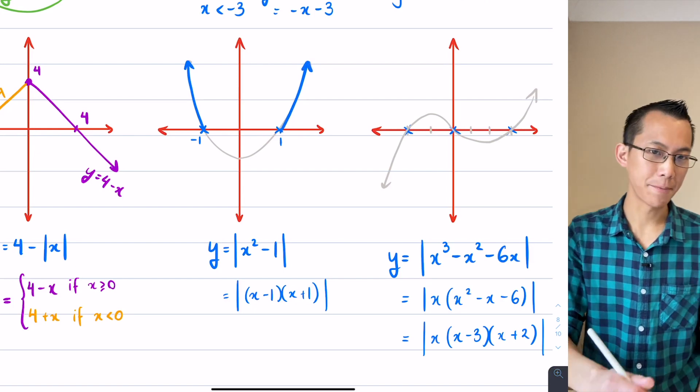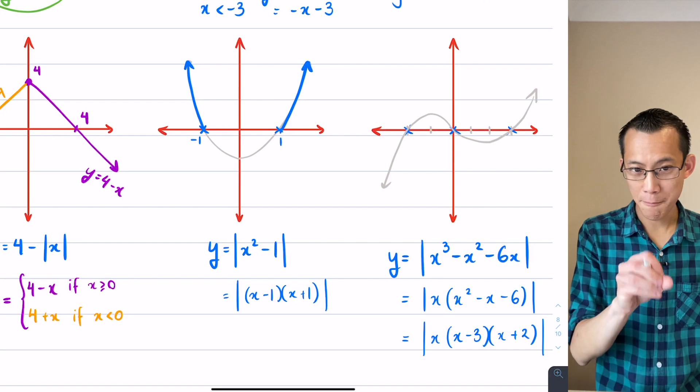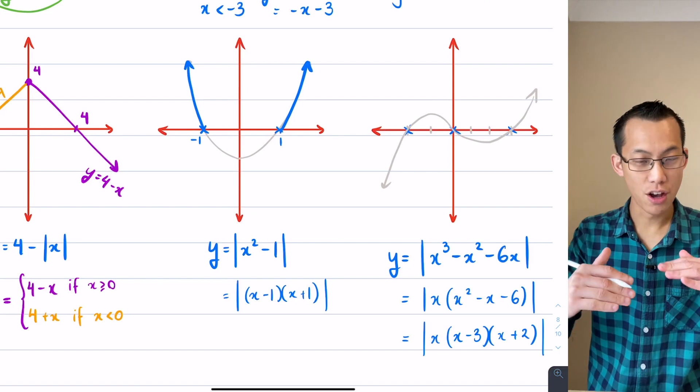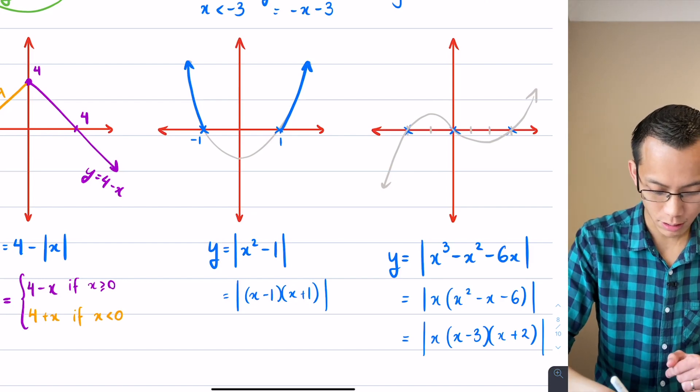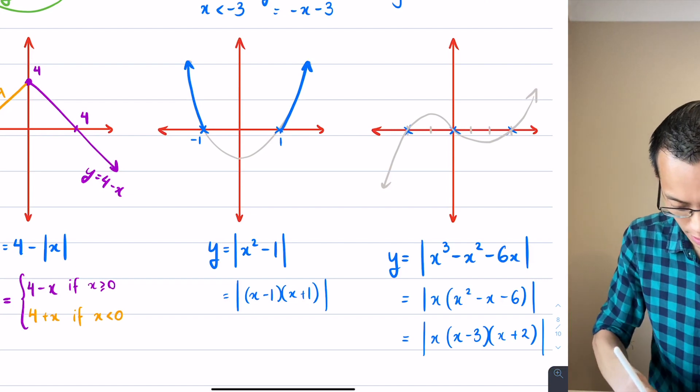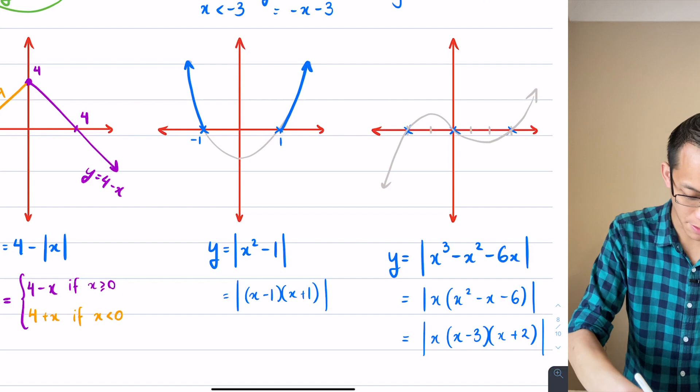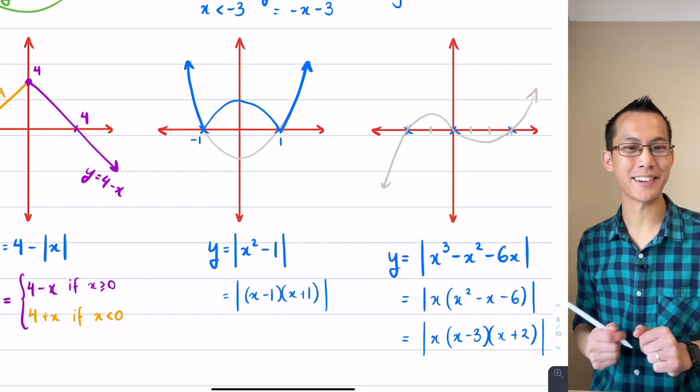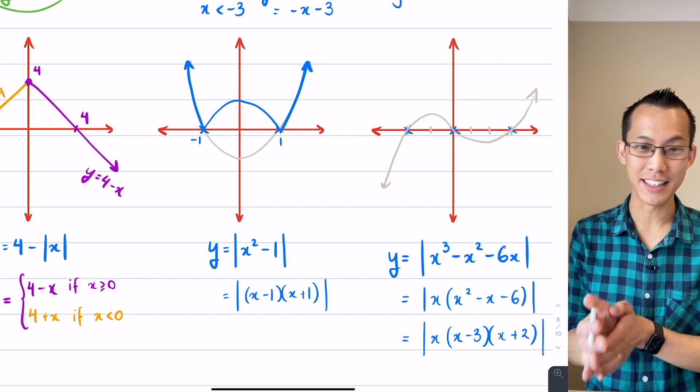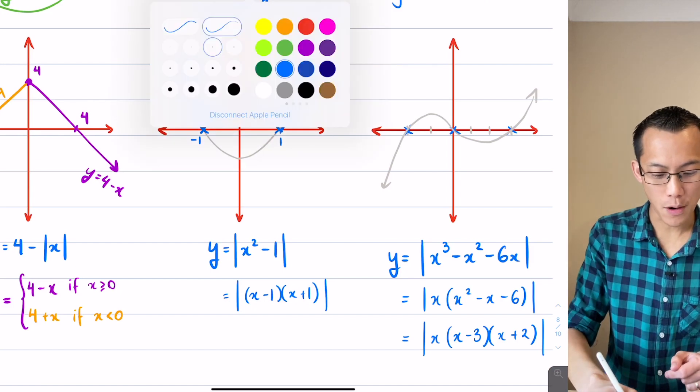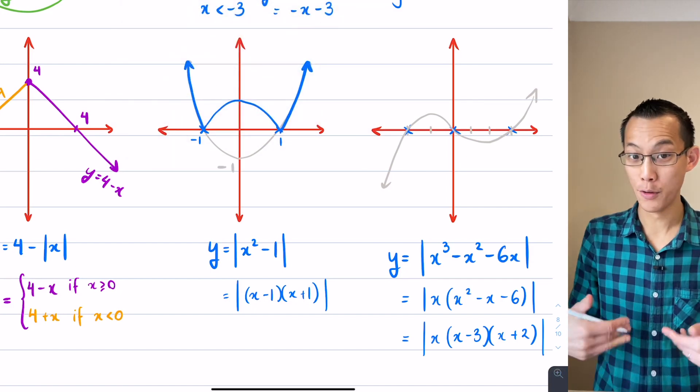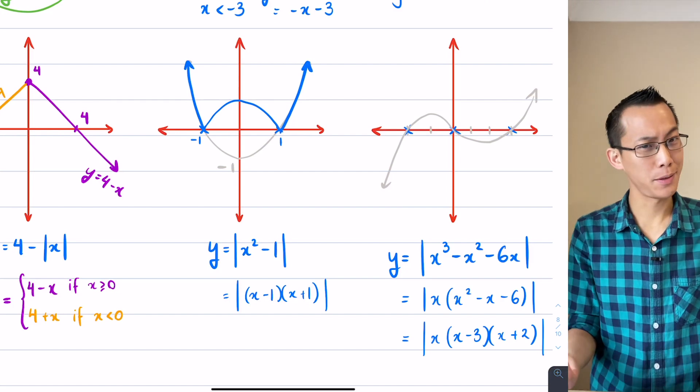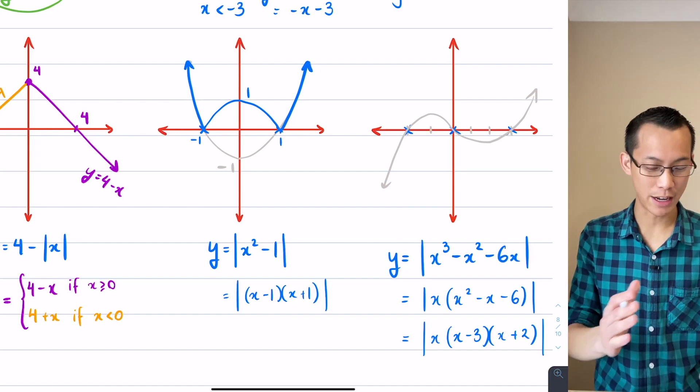All I need to do to complete this graph is take that troublesome negative section right there in the middle between x equals negative 1 and x equals 1, and reflect it up so I have the positive section. Looking at my scale, I'm guessing it'll be something like this. Obviously I have another y-intercept there which I need to know. My guide graph would have had a y-intercept down here of negative 1, so because I've reflected up, that y-intercept of negative 1 just becomes a y-intercept of positive 1.